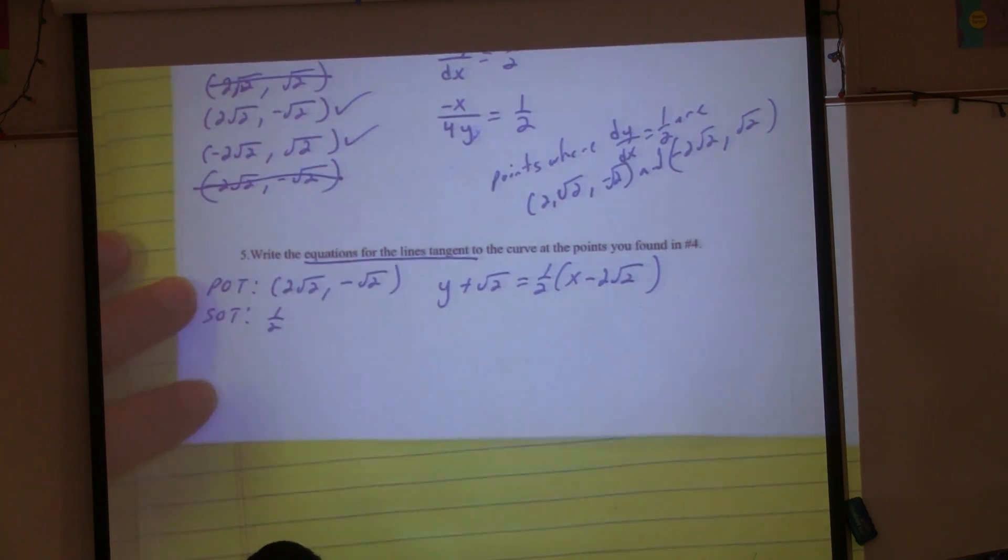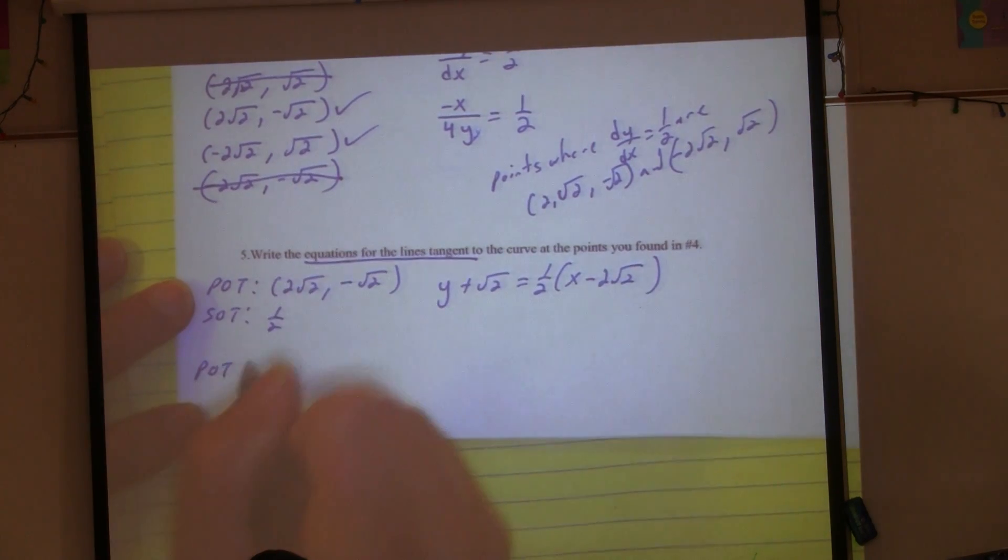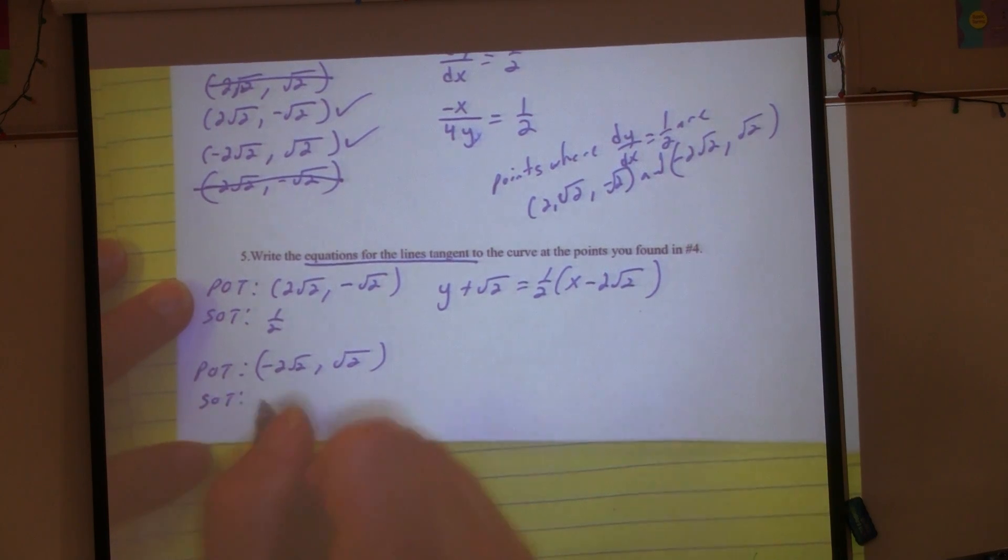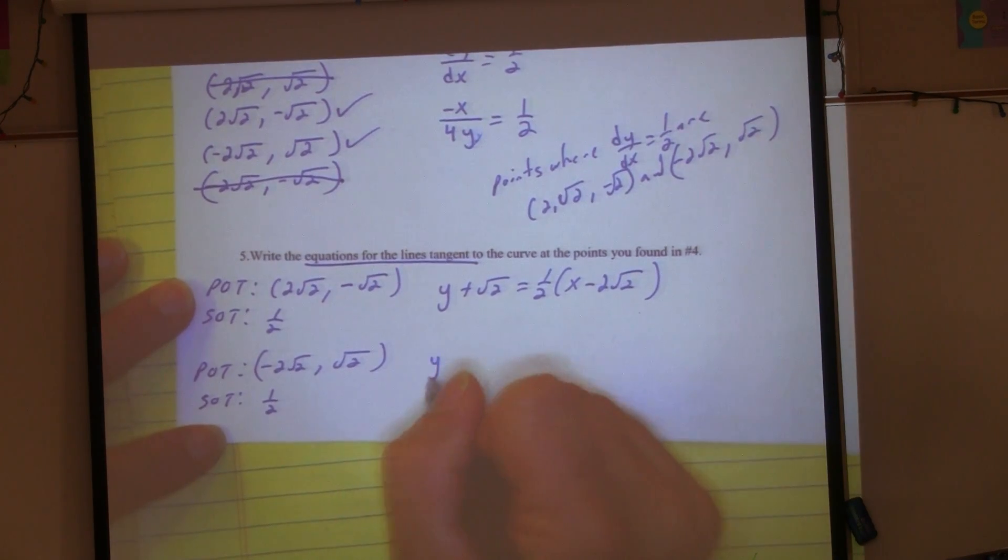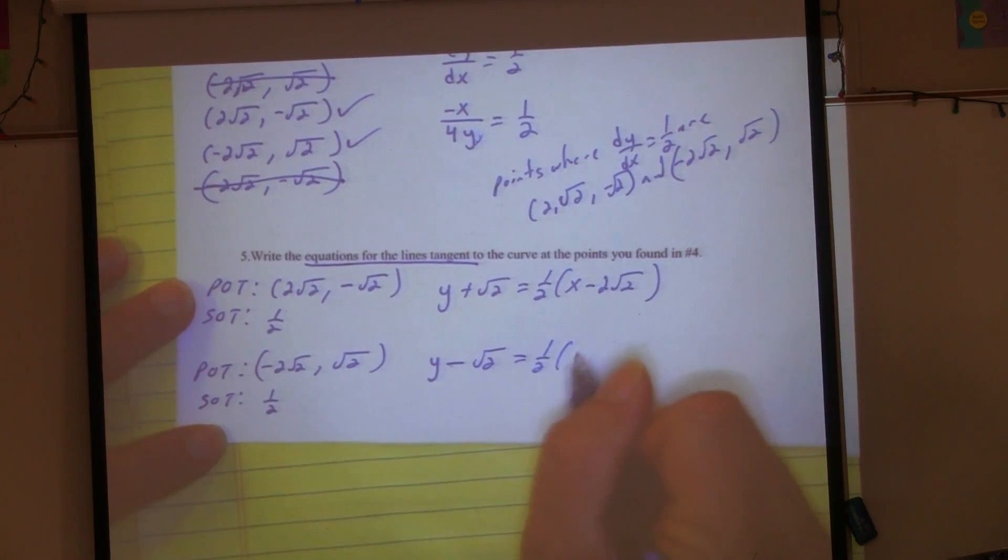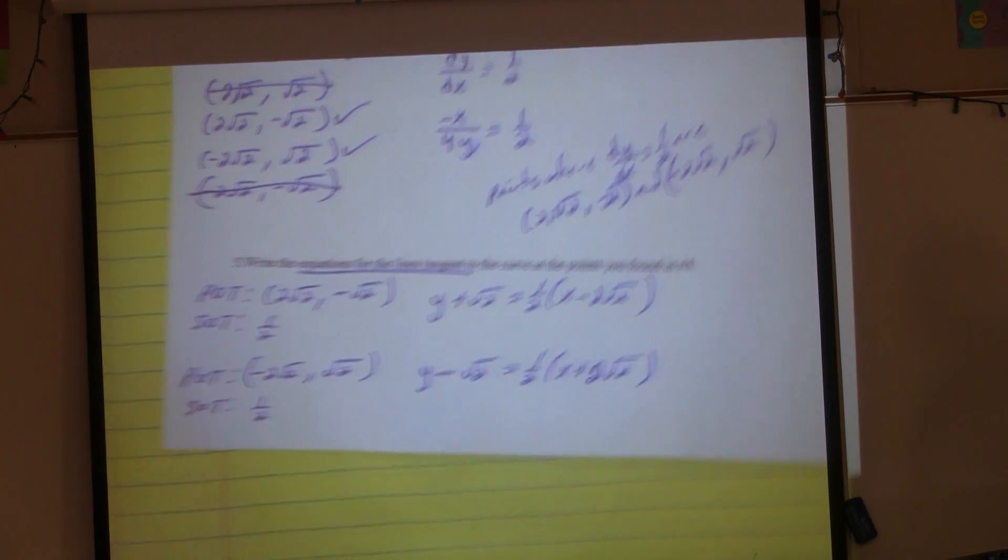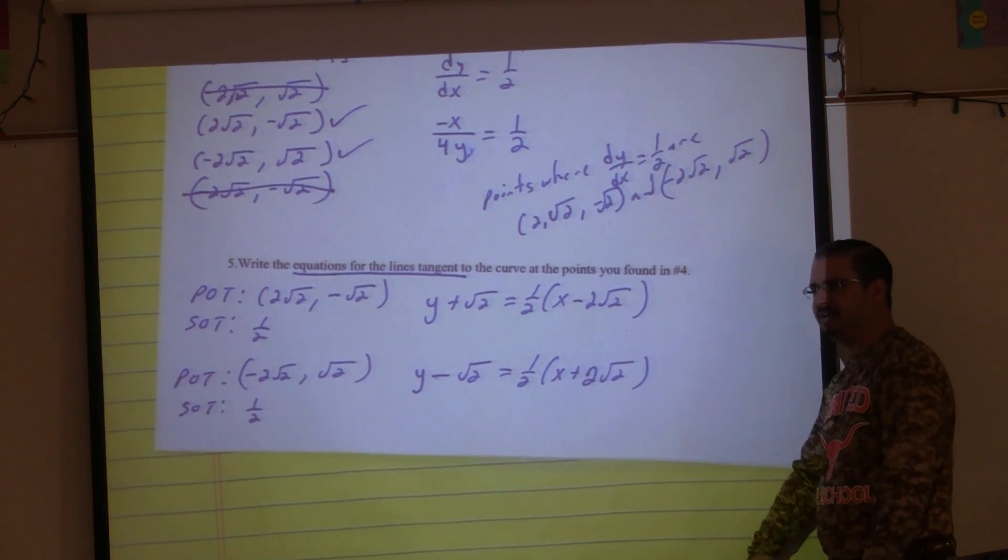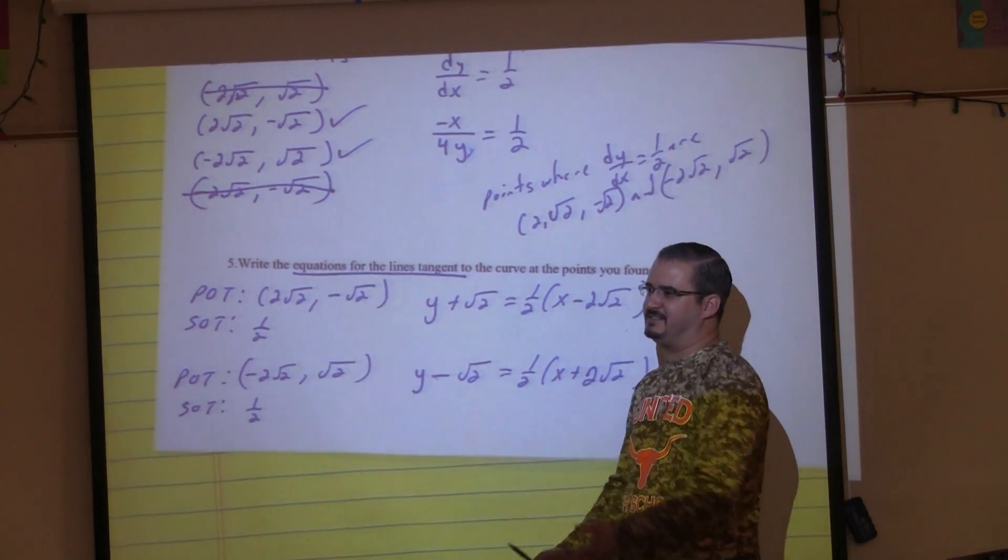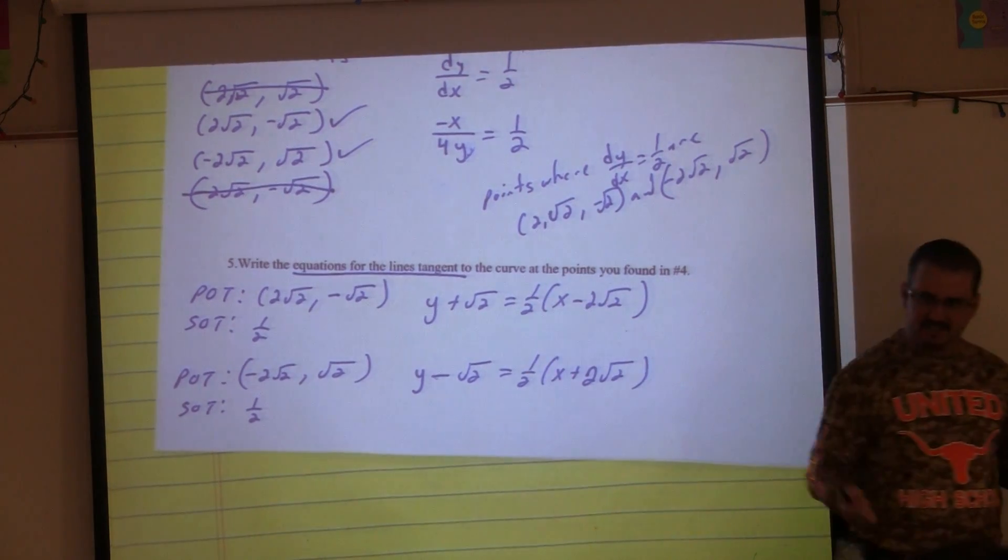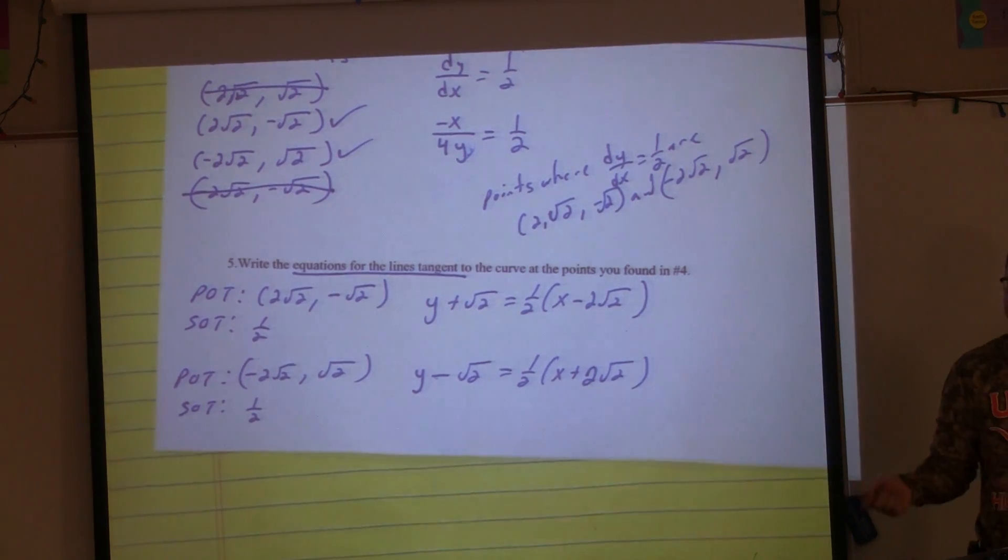How about the slopes in quadrant 2? Positive. So positive 1/2 should have been something that was here, where my x's are negative and my y's are positive. And that's one of them. Quadrant 3? We have all negative slopes. Quadrant 4 we would have positive slopes. So that would be a positive x and a negative y, which is exactly what we have.